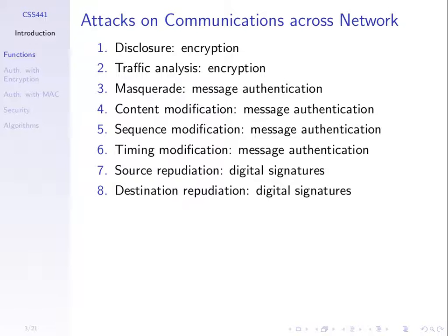Masquerade — pretend to be someone else. How do we stop that? We can't stop someone pretending to be someone else. What we do is use techniques such that if they do, we can detect that they have. With the first two attacks, or disclosure especially, we can stop the message being disclosed by encrypting. But for the active attacks, the normal approach is we can't stop the attacks, but we use techniques such that the receiver can detect if an attack has taken place. For masquerade, we use message authentication.